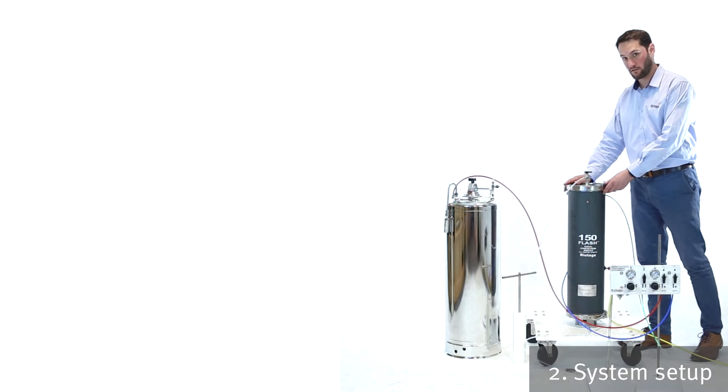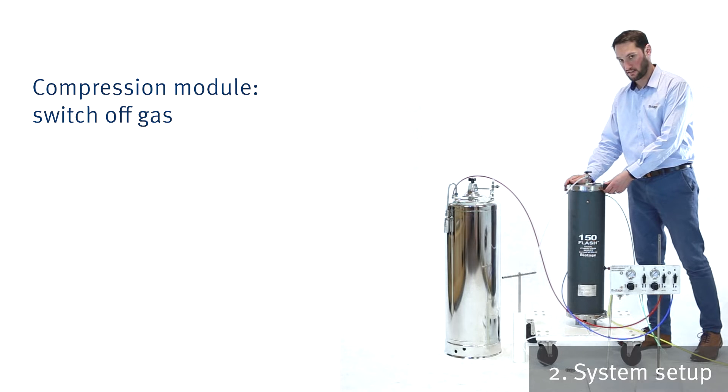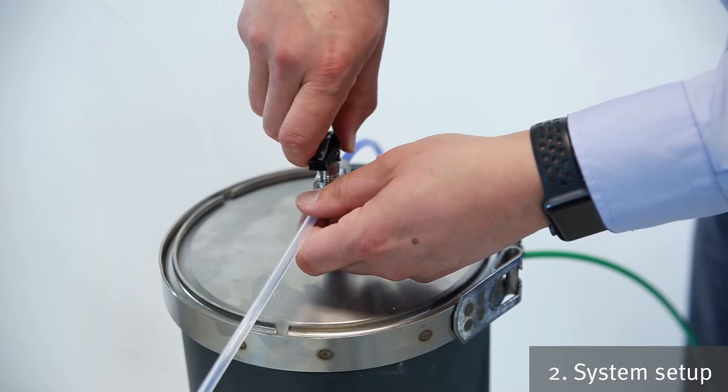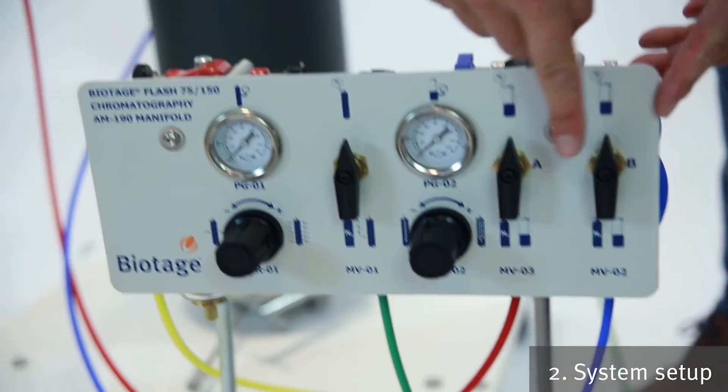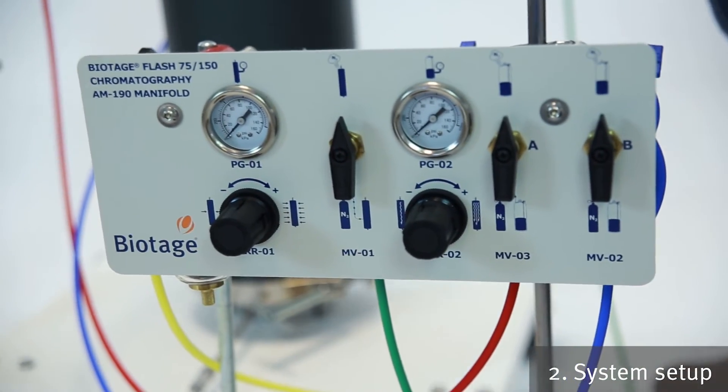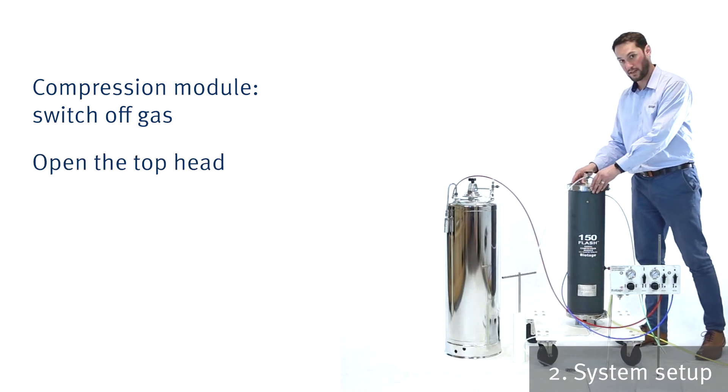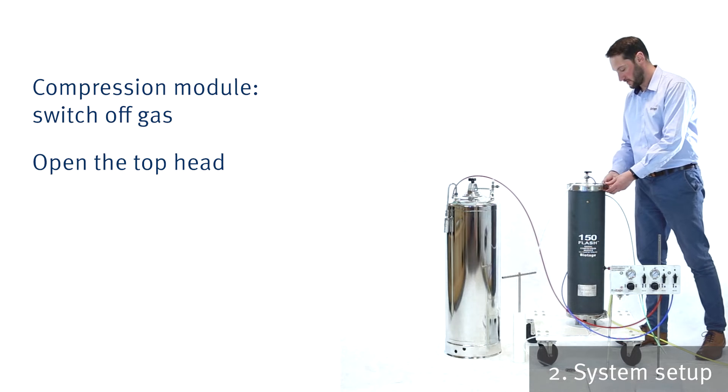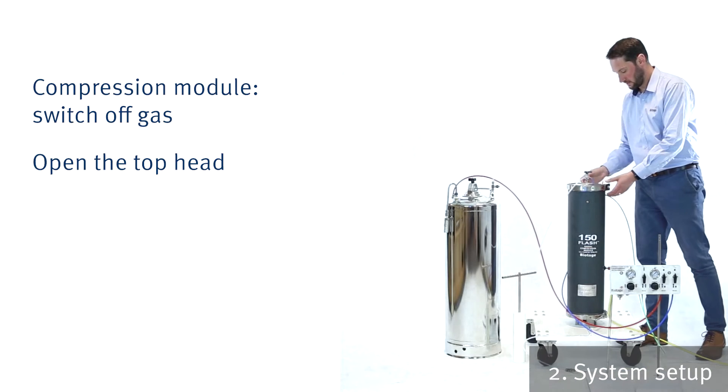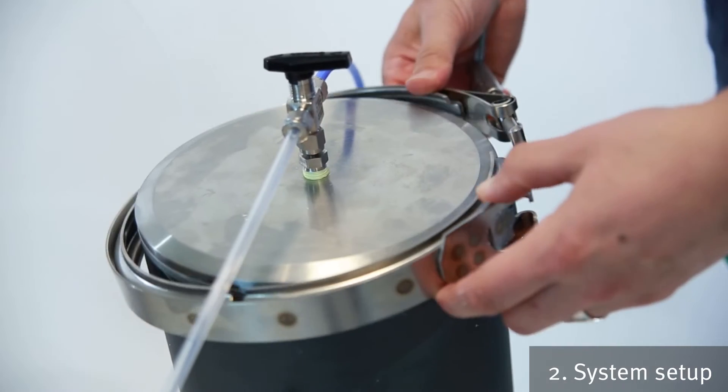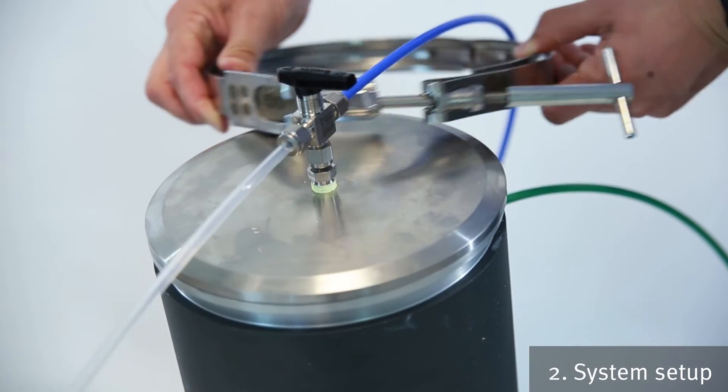Okay, so next up we're going to load the cartridge. So again, just check that there's no gas supply. So make sure that the top three-way valve is in the off position and our three valves on the AM190 are also off. So the top head is secured in place with the V-band clamp. So you unscrew the fitting on the side. Take that off. Just slide off to the side.